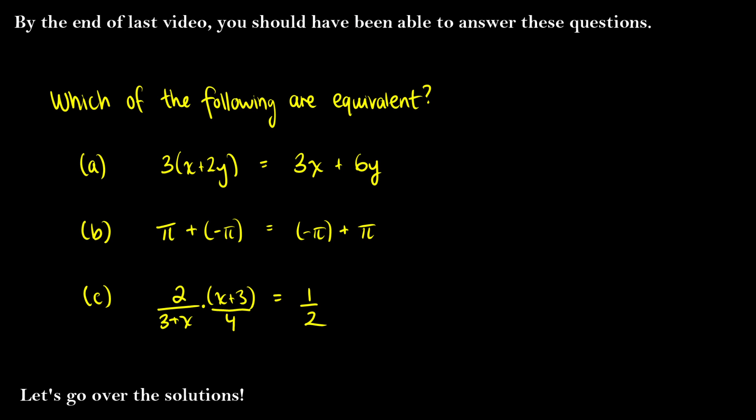In the last video, we introduced the properties of real numbers. We learned things like commutativity, associativity, and so on. And I gave you three practice questions. So in this video, we're going to talk about which of these are equivalent and why using the properties, if they apply.